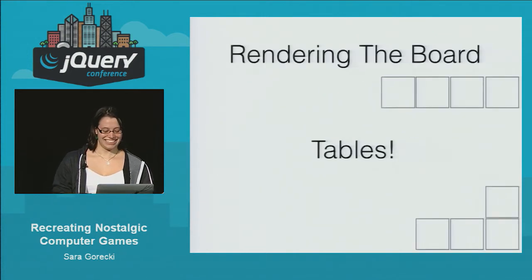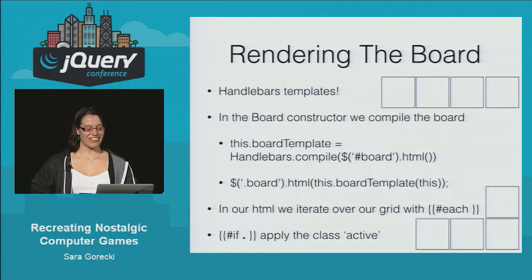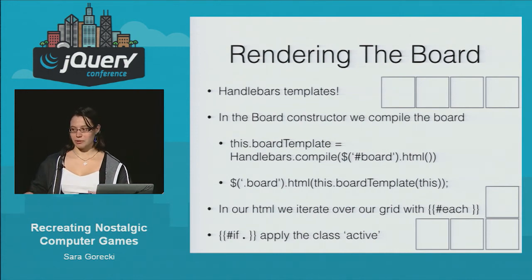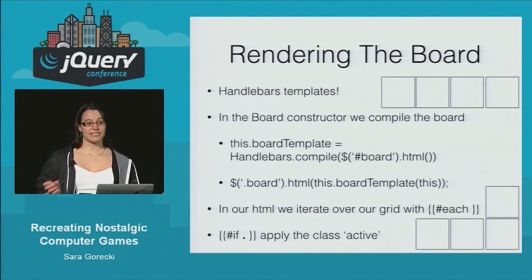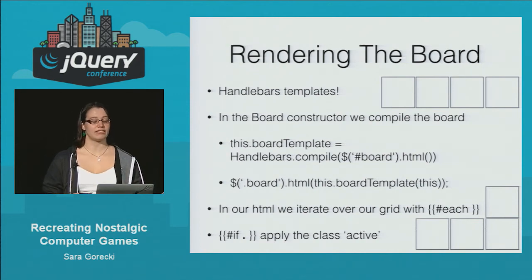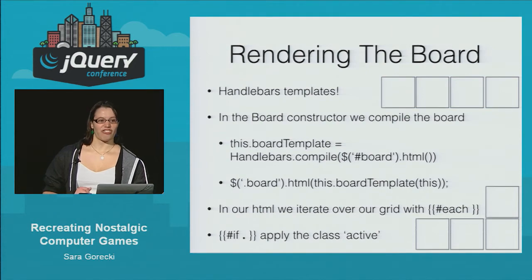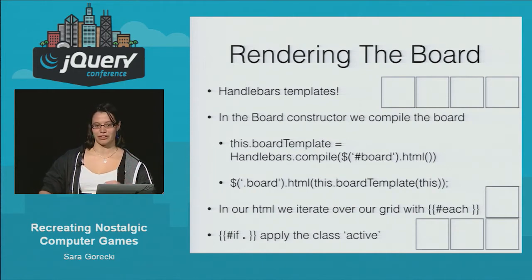To render the board, I used Handlebars templates. I set the width and the height and basically used Handlebars to iterate through the grid, creating column divs and tile divs inside. I would check each tile for any content, and if it had anything there it would get the class active so the tile would appear on the board instead of being an empty grid. Something else I learned in rendering the board is that iterating over an array filled with undefined values is not a good idea — initially the board was all undefined, but I later changed the values to false because it worked better and you could iterate over it.